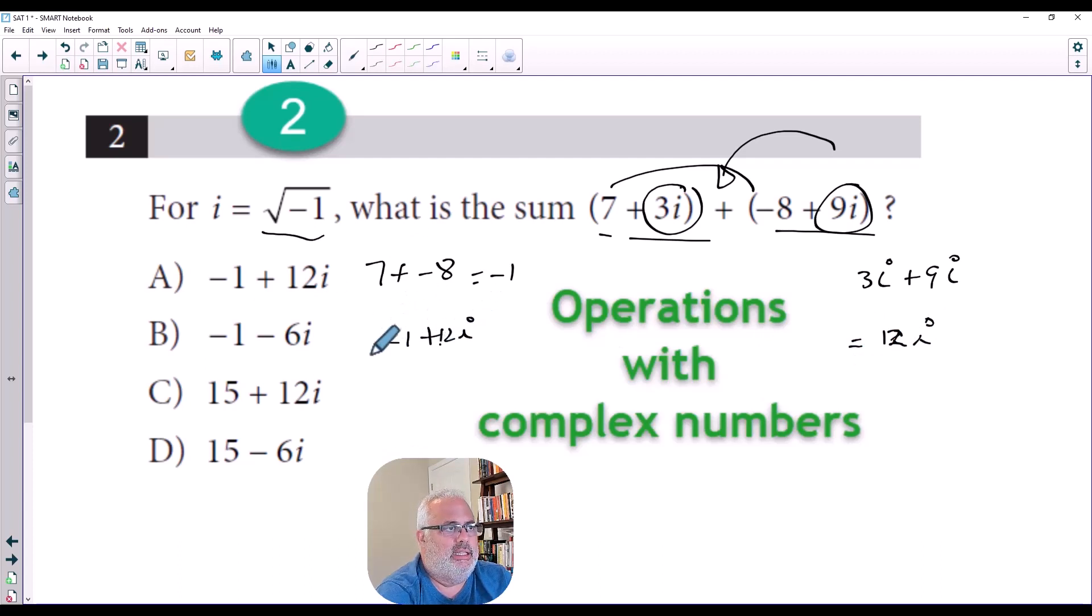So basically the answer here is negative 1 plus 12i. And this is the answer. Negative 1 plus 12i. And now is when I look at the multiple choices.